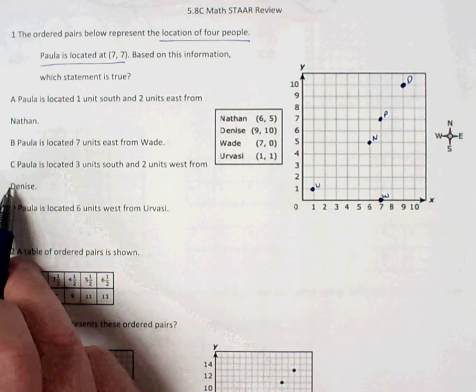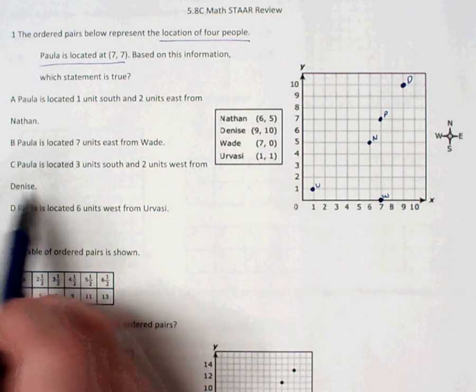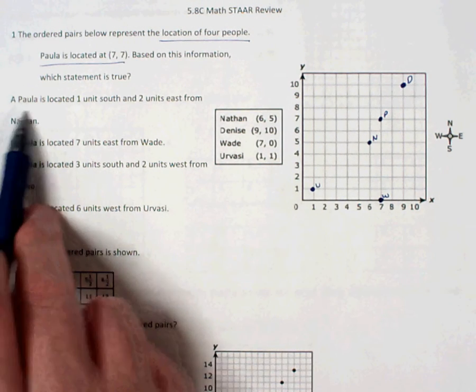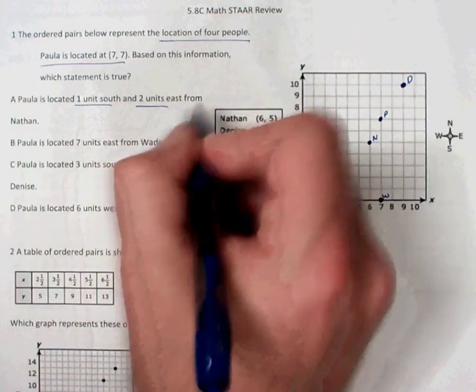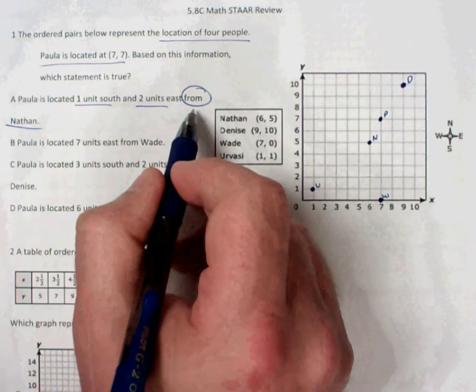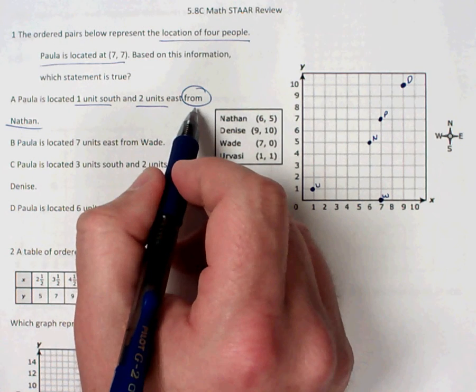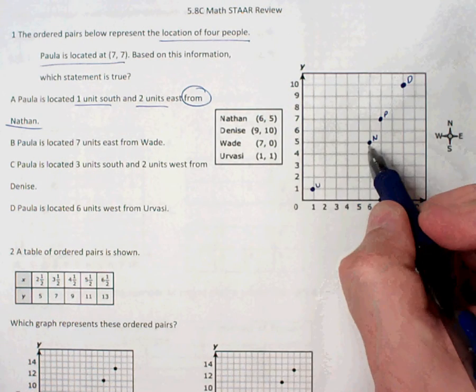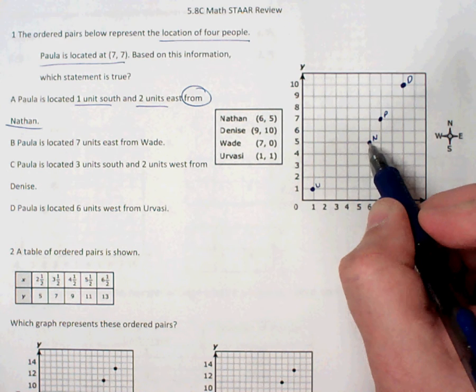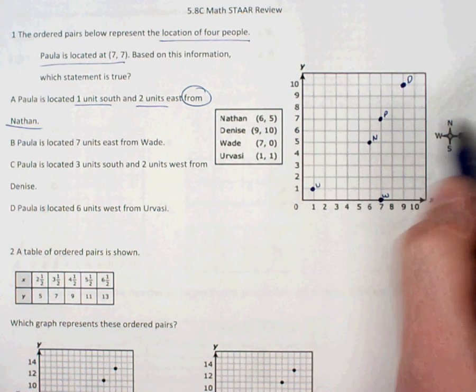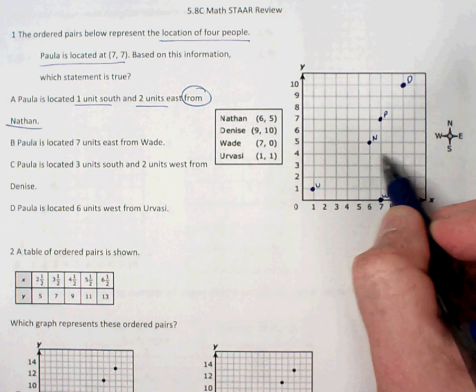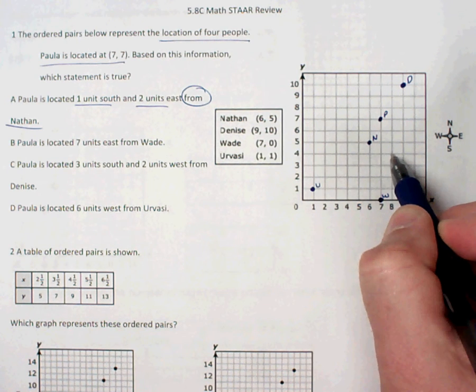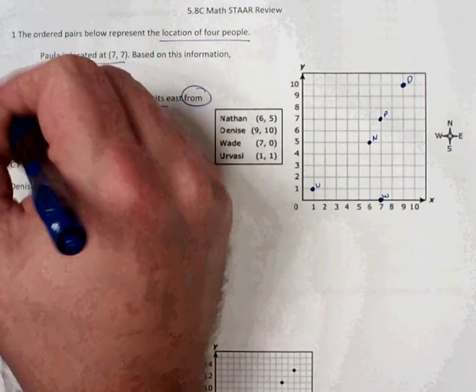Alright, now I have to figure out which one of these statements is true. So let's start here. Paula is located 1 unit south and 2 units east from Nathan. And I need to key on that from word because that means I need to start wherever Nathan is. Well, Nathan is here. So if I go 1 unit south, and here's my compass to tell me which is north, south, east, west, if I don't remember. If I go 1 unit south and 2 units east, I do not end up at Paula. So A is not correct.